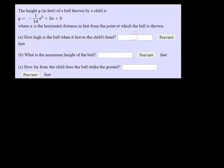The maximum height of the ball is the vertex, so for that we need to find negative b over 2a. So b in this case is 2, so it would be negative 2 over 2 times a, which is negative 1 over 14.